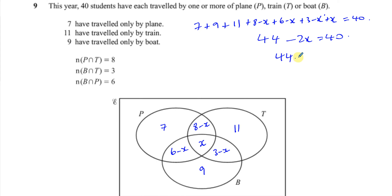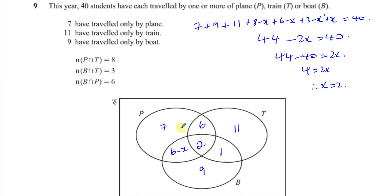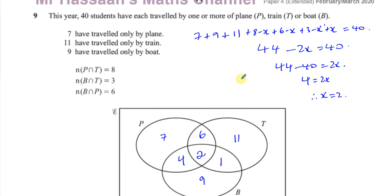So 44 minus 40 equals 2x, meaning 4 equals 2x, so x equals 2. The centre is 2. Therefore the plane-and-train-only section is 8 minus 2 = 6, the boat-and-train-only section is 3 minus 2 = 1, and the boat-and-plane-only section is 6 minus 2 = 4. Checking: 7 + 6 + 2 + 1 + 4 + 11 + 9 = 40. Correct!